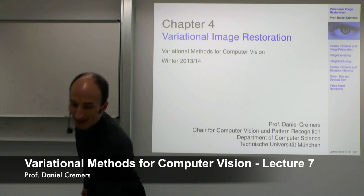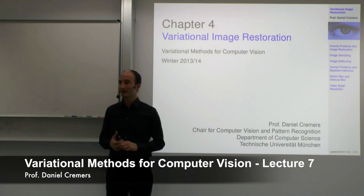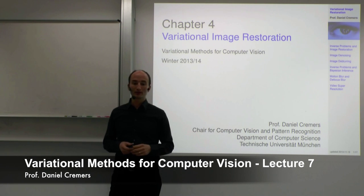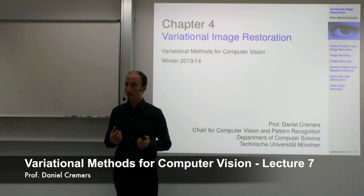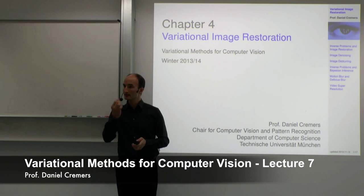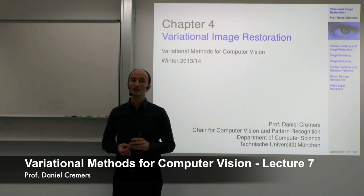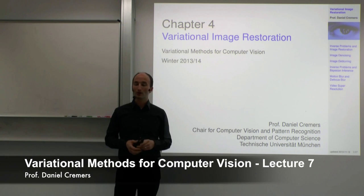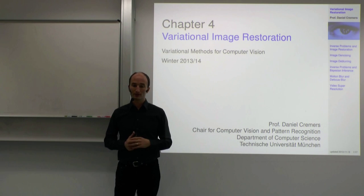Welcome to the next class on variational methods for computer vision. This is chapter 4. Last chapter, chapter 3, we saw one of the core components of variational methods: the Euler-Lagrange equation, that defines this extremum principle. The minimum of the energy is attained if the Euler-Lagrange equation is fulfilled, so that is a necessary but, as we saw in general, not sufficient condition.